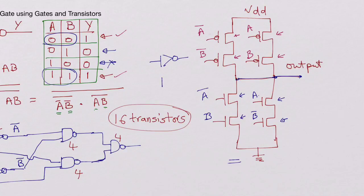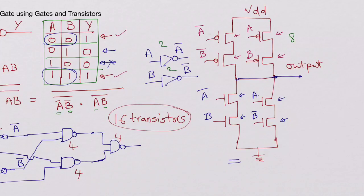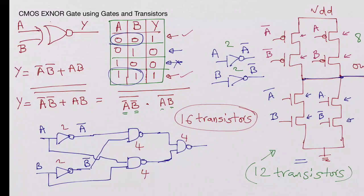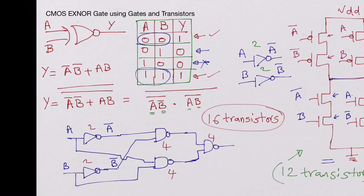Keep in mind you still need two inverters to generate Ā and B̄ from A and B. Looking at the total transistor count for this approach: 2 plus 2 for the inverters and 8 for the transistor network, giving a total of 12 transistors to build the CMOS exclusive NOR gate — compared to 16 in the gate-level approach.